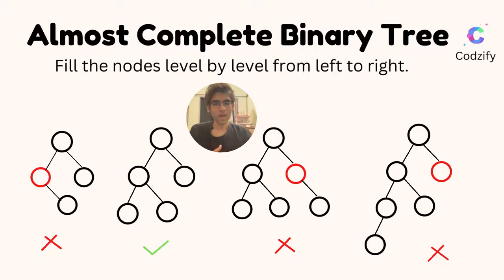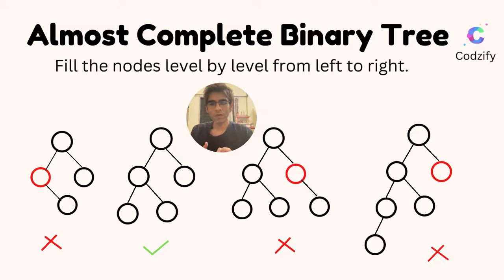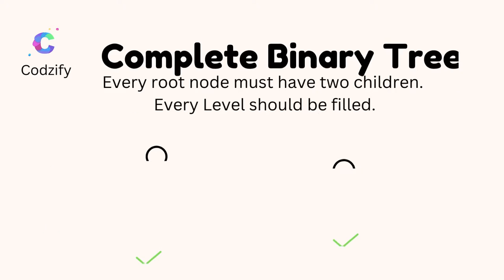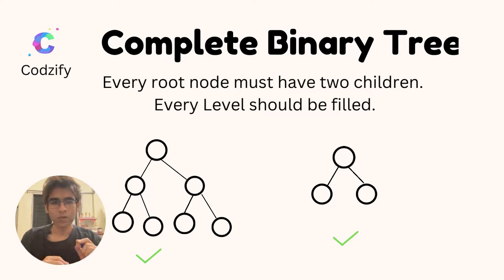The fourth example is not a complete binary tree because level two contains a left node and a right node, and the left node contains its own left and right nodes. However, the right node of level two should be filled first before we fill children of level three's left node. This is how you identify an almost complete binary tree.